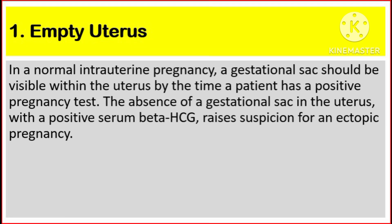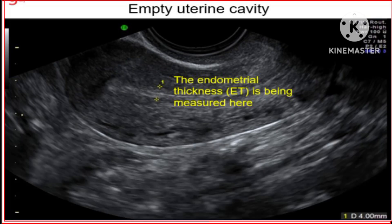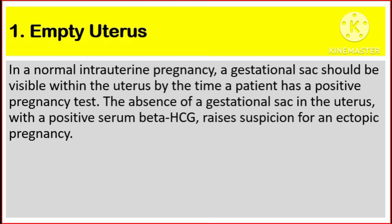Number one, empty uterus. In a normal intrauterine pregnancy, a gestational sac should be visible within the uterus by the time a patient has a positive pregnancy test. The absence of a gestational sac in the uterus with a positive serum beta-human chorionic gonadotropin raises suspicion for an ectopic pregnancy.